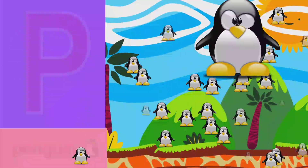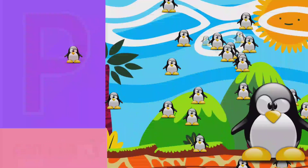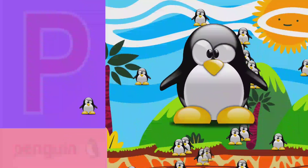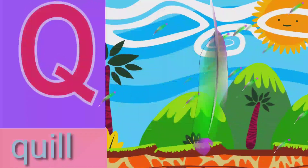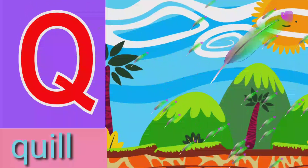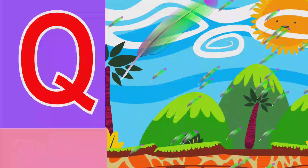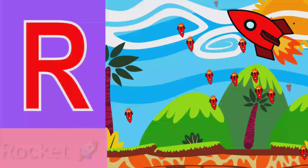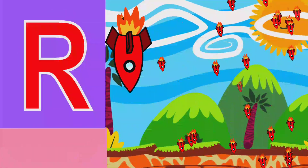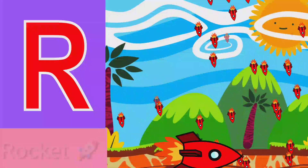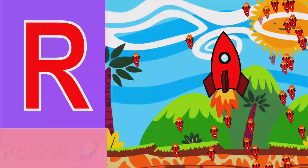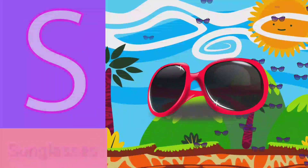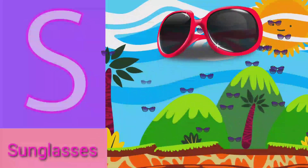P for penguin, Q for quill, R for rocket, S for sun glass.